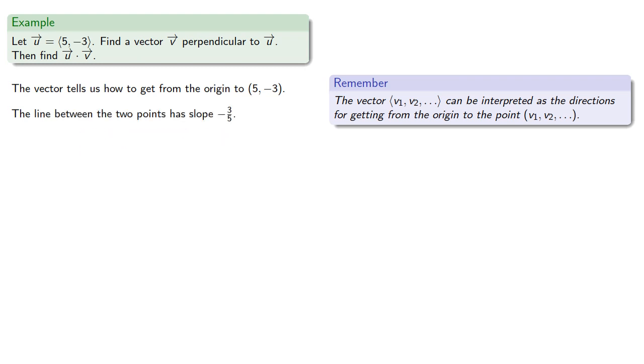Now the line between the two points has slope -3/5, so a perpendicular line has slope 5/3.